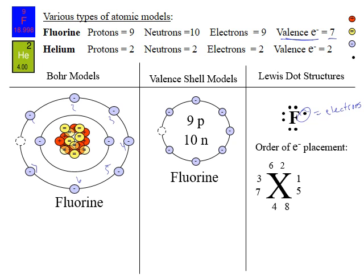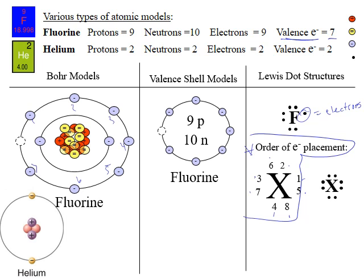Another even more simplified version is called the Lewis dot structure. Here you have the symbol for fluorine — F — in the center, and then dots arranged in a specific pattern around it. The dots are the electrons. The order works like this: first, second, third, fourth, then fifth, sixth, seventh, eighth — placed on each side going around. For helium: the Bohr model shows two protons, two neutrons, two electrons all in the first shell. The valence shell model says 2p, 2n, and shows the full valence shell. The Lewis dot structure would be the symbol He with one dot at position one and a second dot at position two.